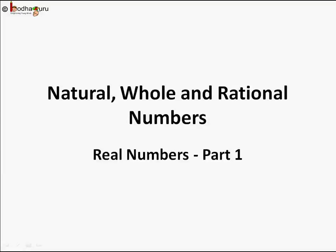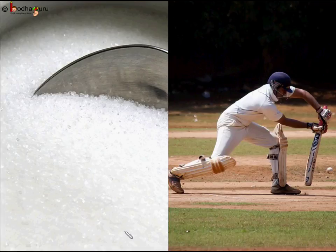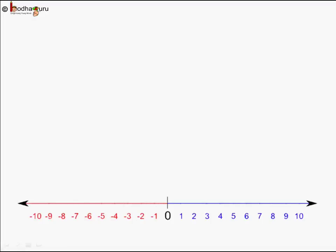Hello friends! We see numbers everywhere, like a cricket score of 120 runs, getting half kg of sugar, or getting test marks of 23 and a half. How can we represent these numbers on a number line?